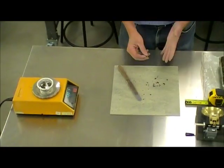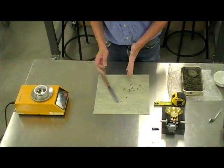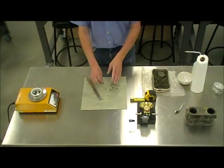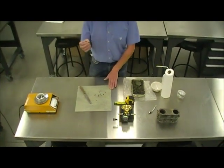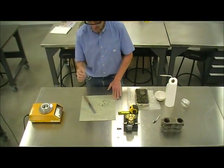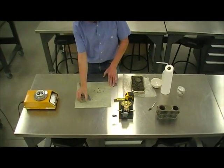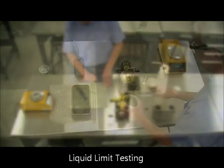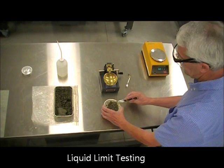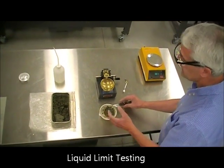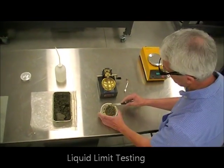The plastic limit then is the average water content in the condition where we were able to roll the material to a one-eighth of an inch thread for a length of one inch without crumbling. Now we're going to proceed with the liquid limit, which is the state of water content that separates liquid from plastic behavior.